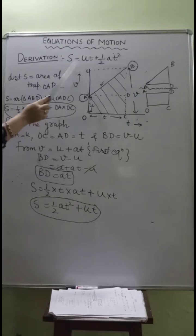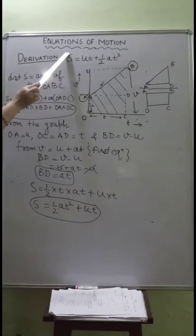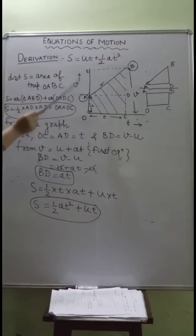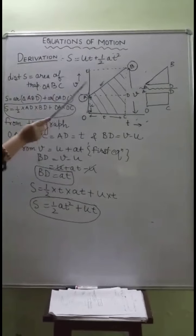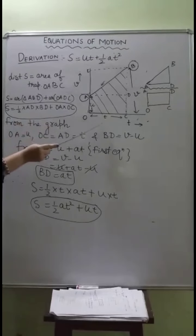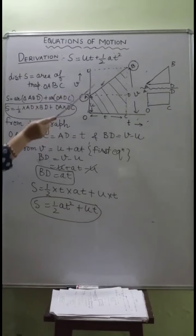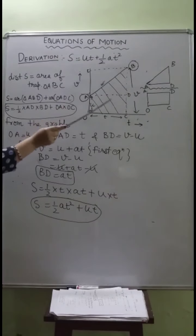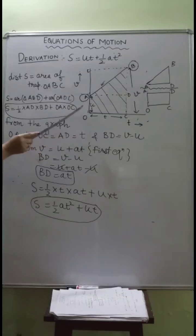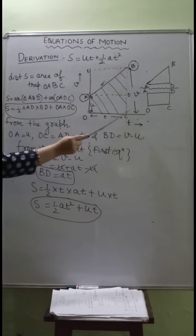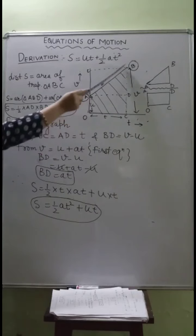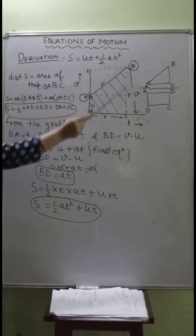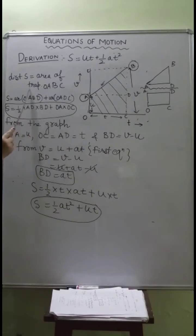The second equation of motion is s = ut + ½at², where s represents the distance travelled by the object. The distance covered is given by the area lying under the graph line AB, as we have learnt previously. The area under AB equals the distance covered. Looking at the shape OABC, it is a trapezium since OA and BC are parallel sides. So distance equals the area of trapezium OABC.